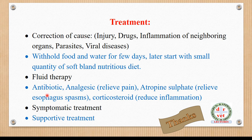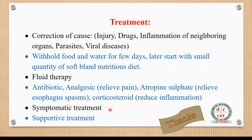To prevent secondary bacterial infestation, give antibiotics and analgesics to relieve pain. To relieve esophagospasm, give atropine sulfate and corticosteroids — which, as you know, reduce inflammation. If other symptoms are observed, give symptomatic treatment, and for better quality of life, give supportive treatment.